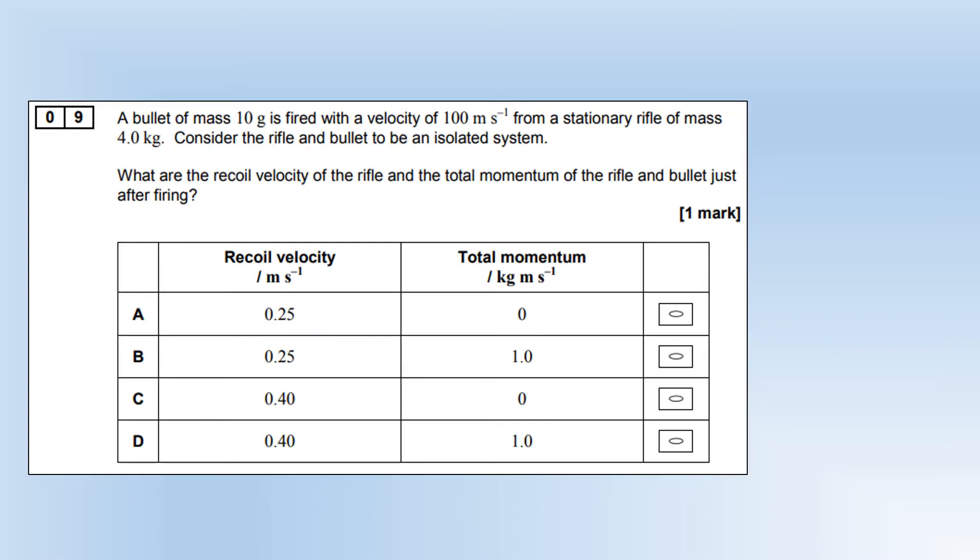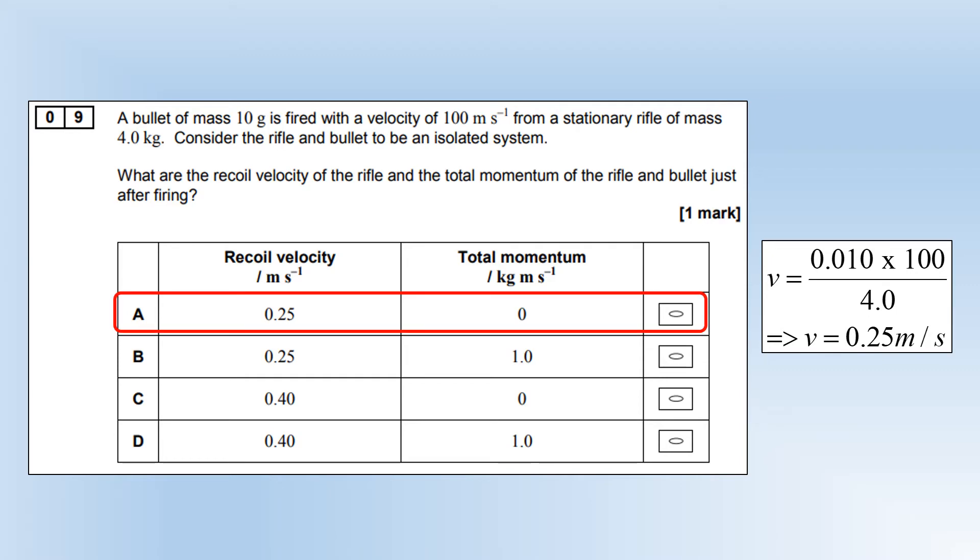A bullet of mass 10 grams is fired with velocity 100 meters per second from a stationary rifle of mass 4 kilograms. Consider the rifle and the bullet to be an isolated system. What are the recoil velocity of the rifle and the total momentum of the rifle and bullet just after firing? No external force is acted, so the total momentum is going to be 0, so it's got to be A or C. To calculate recoil velocity, you work out the momentum of the bullet, divide that by the mass of the rifle, and that gives you 0.25, so it's clearly option A.